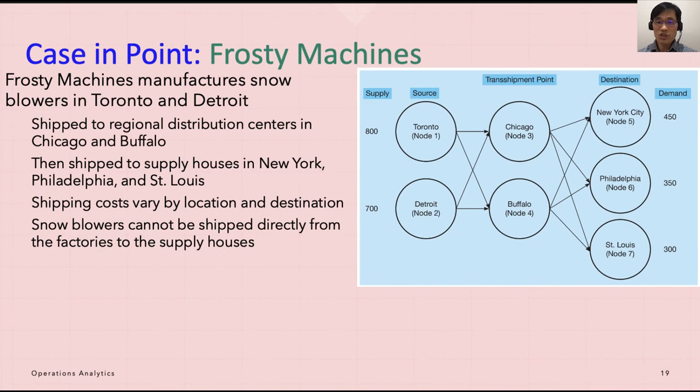This is why Chicago and Buffalo are listed not only as destinations, but are as sources. So these are destinations, but also sources, and this is the transshipment point, and you are just stopping by here, and then they are delivering things over there.